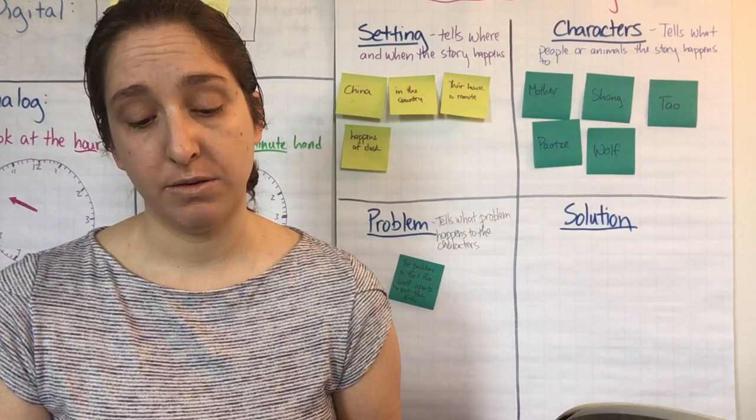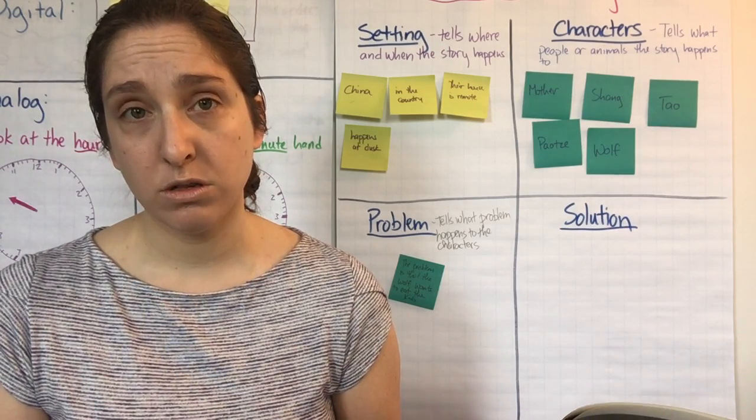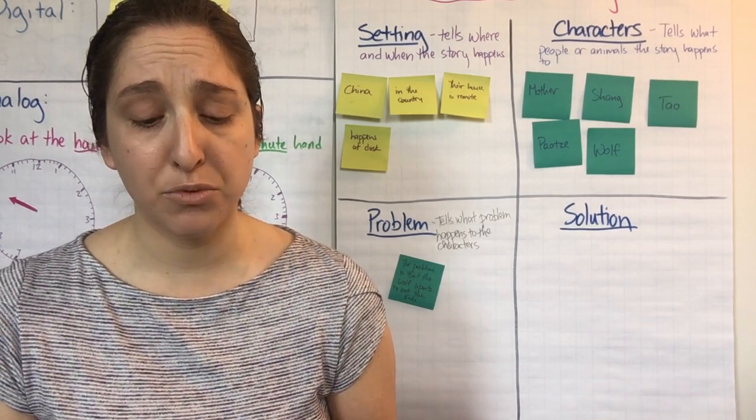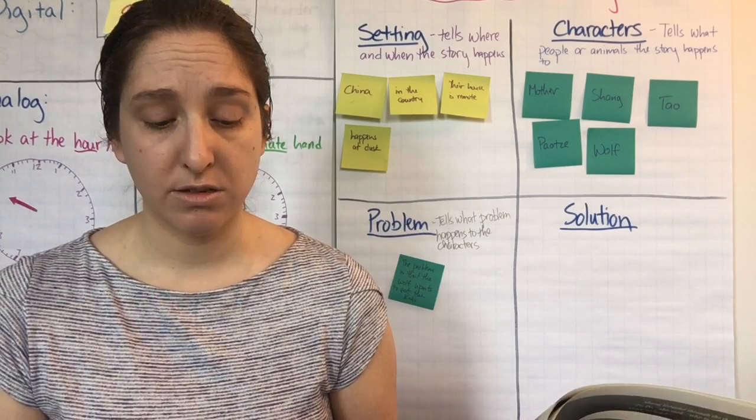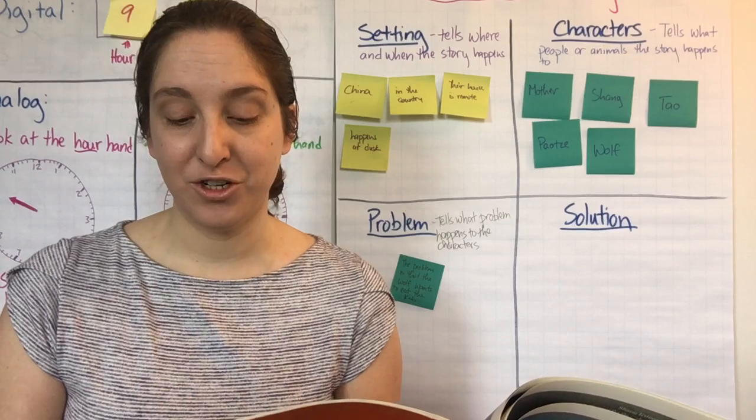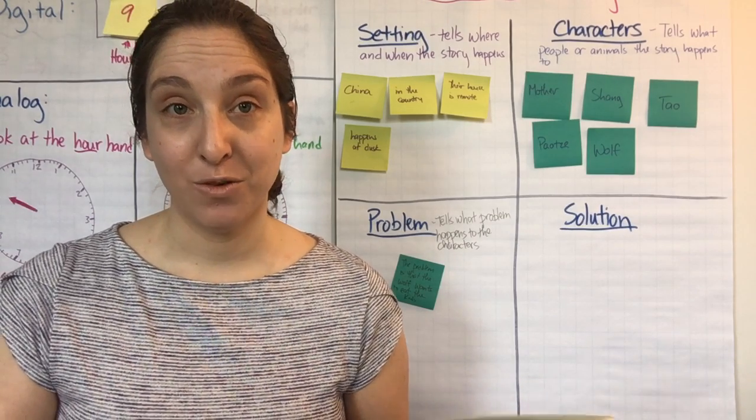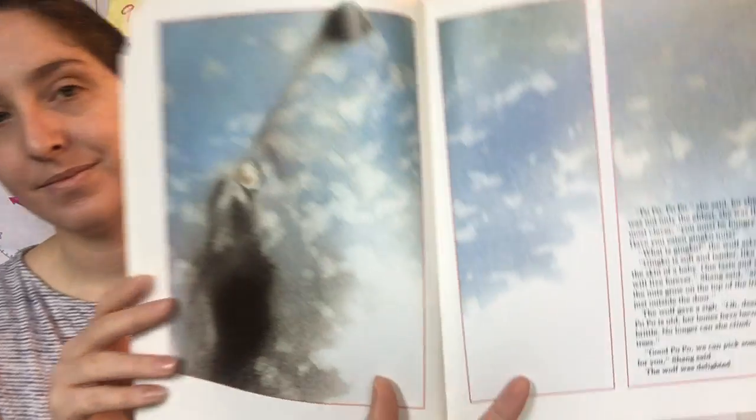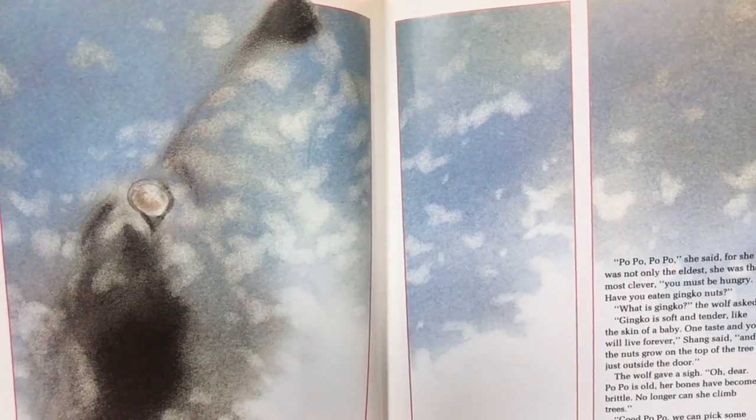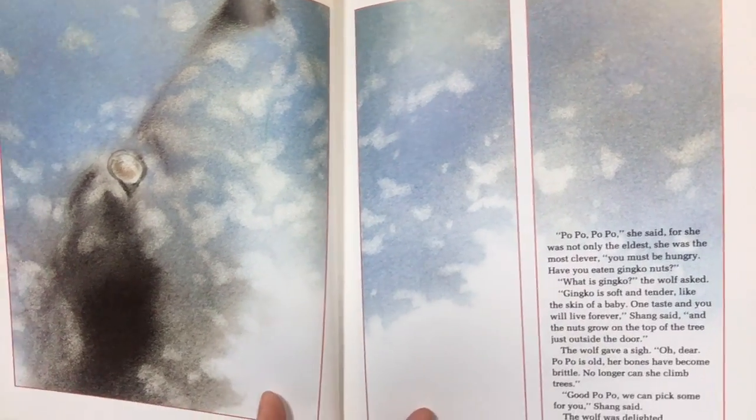'Oh, dear. Popo is old. Her bones have become brittle. No longer can she climb trees.' 'Good Popo, we can pick some for you,' Shang said. The wolf was delighted. There's the wolf looking so delighted about those ginkgo nuts.